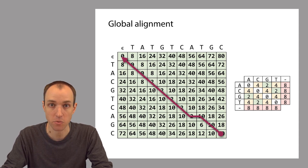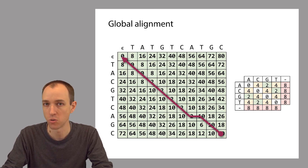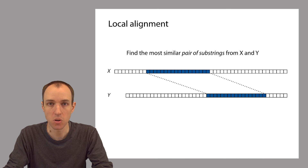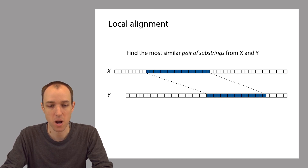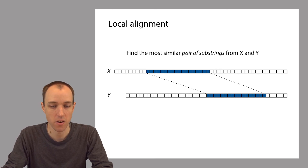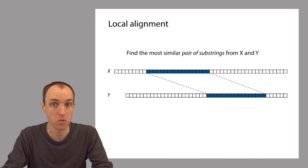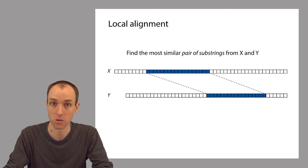Global alignment is powerful in the sense that it gives the user the ability to set each of the different penalties according to the biological problem at hand. Local alignment, on the other hand, is a somewhat different kind of problem, though surprisingly the solution is quite similar to the solution for edit distance. In the local alignment problem, we're not trying to find the distance between two strings, and we're not trying to find occurrences of one string inside another. Here the problem we're trying to solve is: given two strings x and y, identify the substring of x and the substring of y that are most similar to each other.